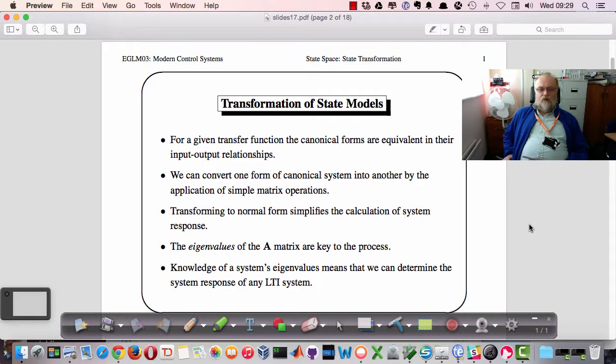But to be able to do that, we need to know what the eigenvalues of the A matrix are so that we can put the A matrix into the normal canonical form. And so once we've done that, if we have the system's eigenvalues, we can determine the system response based on the eigenvalues.